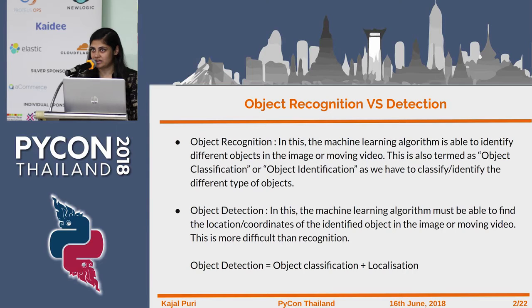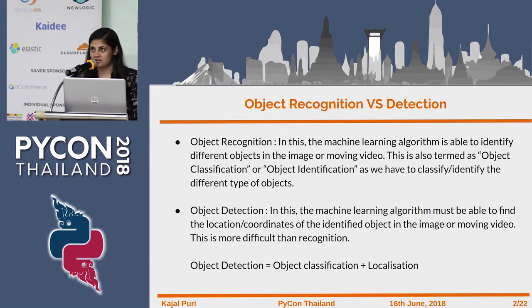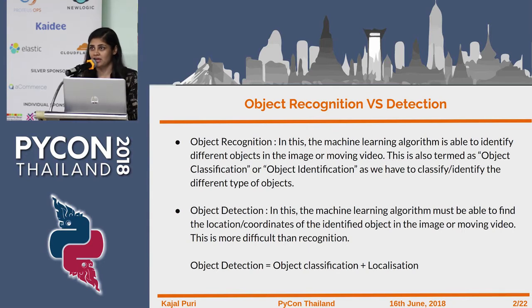People often get confused with object detection and object recognition. When I started with it I thought they were synonymous, but actually they are different. In object recognition, the machine algorithm tries to identify the different types of objects in a given image or moving video. This is also known as object classification or object identification. In this problem we really just identify the object — nothing more than that.